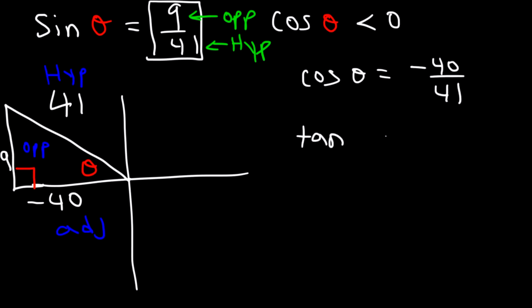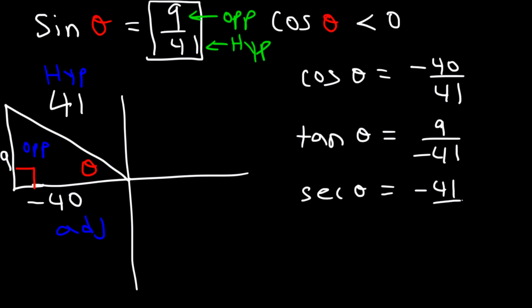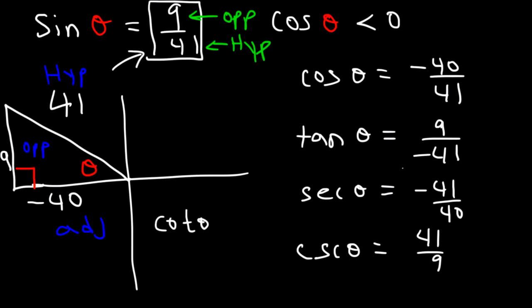Tangent theta is opposite divided by adjacent, so it's 9 over negative 40. Secant is the reciprocal of cosine, so it's negative 41 over 40. Cosecant is the reciprocal of sine, so it's 41 over 9 — just flip this fraction. And cotangent is the reciprocal of tangent, so it's going to be negative 40 over 9.